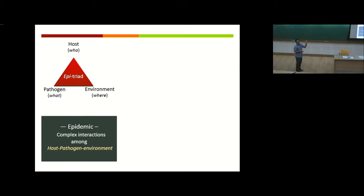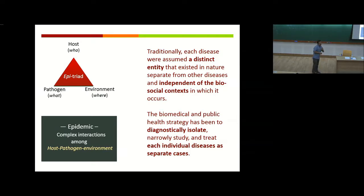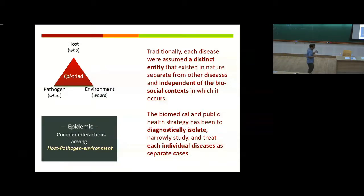The interaction of all three factors determines the health impact on the individual host. Traditionally, each disease was assumed a distinct entity existing in nature, independent of its bio-social context. The biomedical and public health strategy was to diagnostically isolate and treat each infectious disease as a separate case — even if multiple diseases co-occurred in the same community, region, and time period. But this concept has been changing due to evolutionary history and co-morbidity: the presence of more than one disease in the individual at the same time.